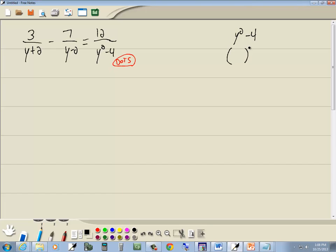With the difference of two squares, we try to write it as something squared minus something else squared. You take a look at each individual piece, like the y squared, and you ask yourself what times itself gives you y squared. That would be y. For the 4, that would be 2 times 2.